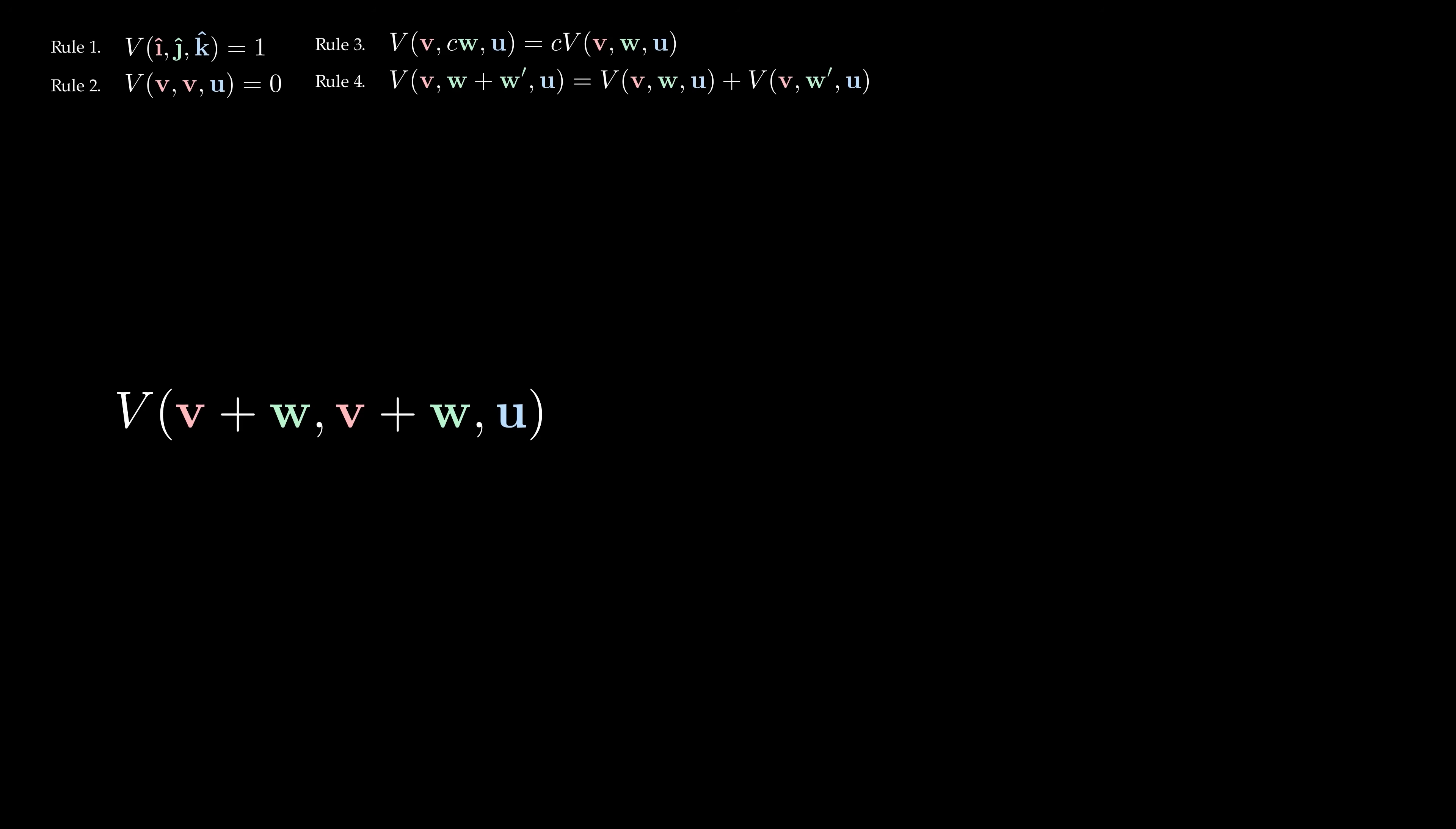And if we repeat the earlier argument involving two copies of the vector v plus w, applying rule 4 to split up the volume into four separate terms, and then using rule 2 to get rid of the first and fourth terms...